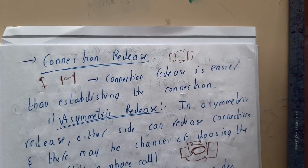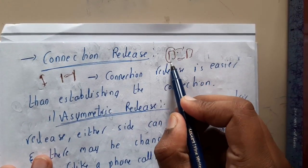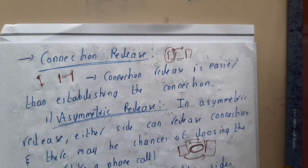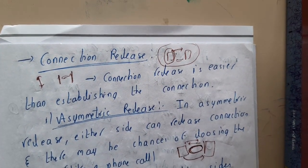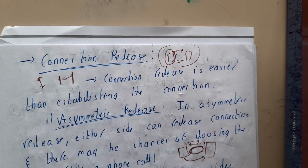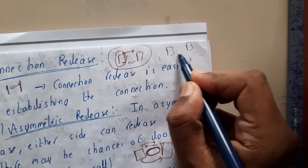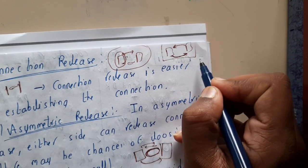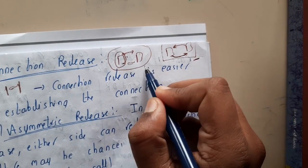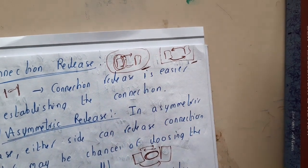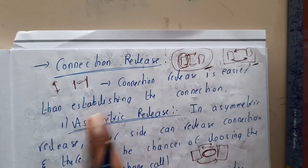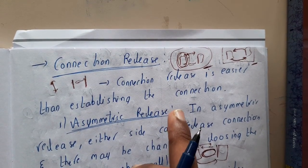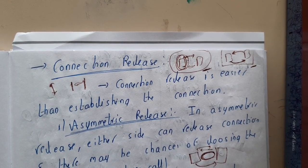Assume you and your friend are on a call. Your friend told everything he wanted to say and just disconnected, but you still wanted to say something — this happens commonly. That is why most conversations end with both parties saying 'bye' before disconnecting. That process — both sides agreeing to end — is called symmetric release. One side deciding and disconnecting alone is called asymmetric release. Connection release is easier than establishment.